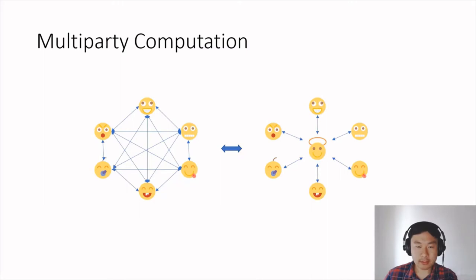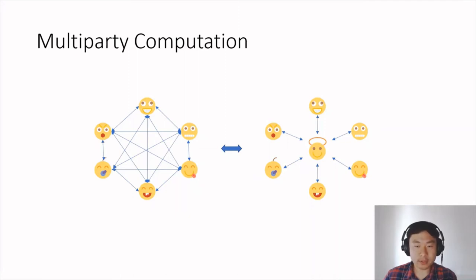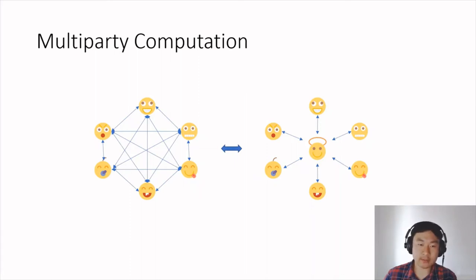The paper is on Secure Multiparty Computation, or MPC. At a very high level, MPC allows a set of parties, each with a private input, to jointly compute an arbitrary function in such a way that nothing about the inputs is revealed — beyond what is revealed by the computed output itself. The parties want to achieve what can be achieved in an ideal setting with a trusted party, and this is especially difficult because some of the parties might be corrupted.